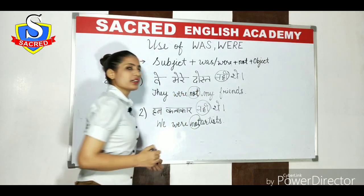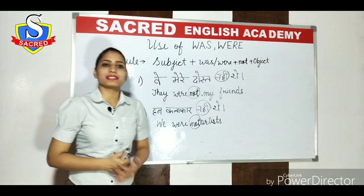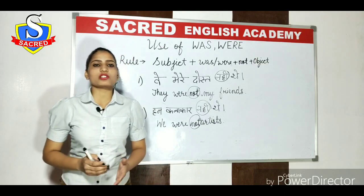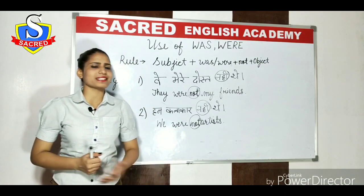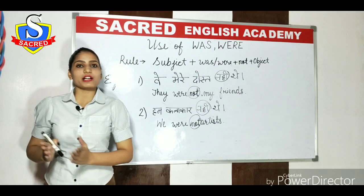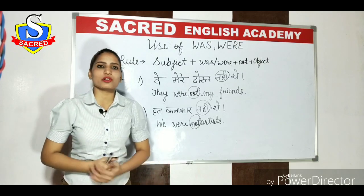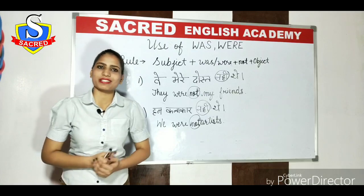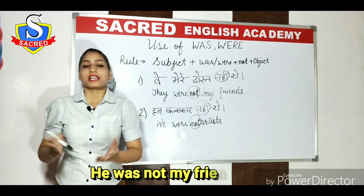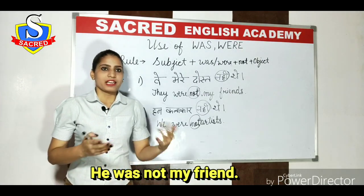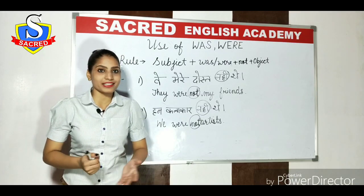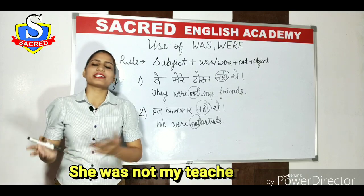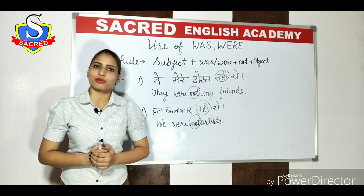The same rule applies here. Ab hum baat karte hain 'was' ke baare mein. Agar hum 'was' ke sentences ko 'not' mein convert karte hain — jaisa ki maine pehla sentence likha tha: 'Woh mera dost tha.' Agar hum isko negative mein convert karte hain: 'Woh mera dost nahi tha' — 'He was not my friend.' 'Woh meri adhyapak nahi thi' — 'She was not my teacher.' So in the same manner, you have to go on by using the word 'not'.